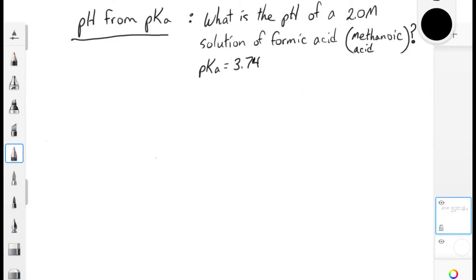In the first example, we'll calculate the pH of a solution that has a given pKa and a given concentration. In this case, we'll work out the pH of a 2 molar solution of formic acid, whose pKa value is 3.74.